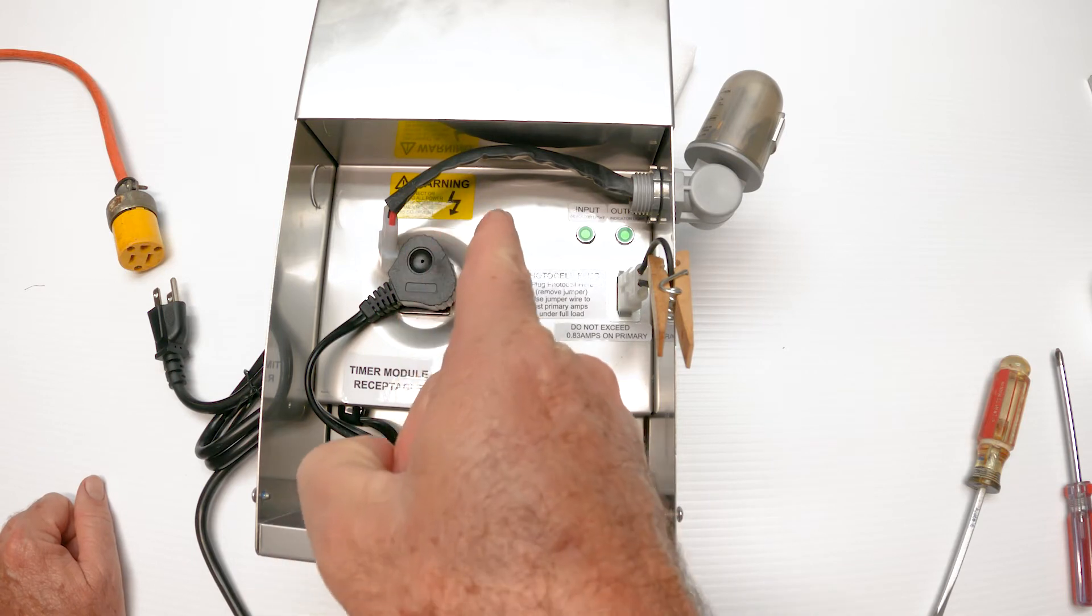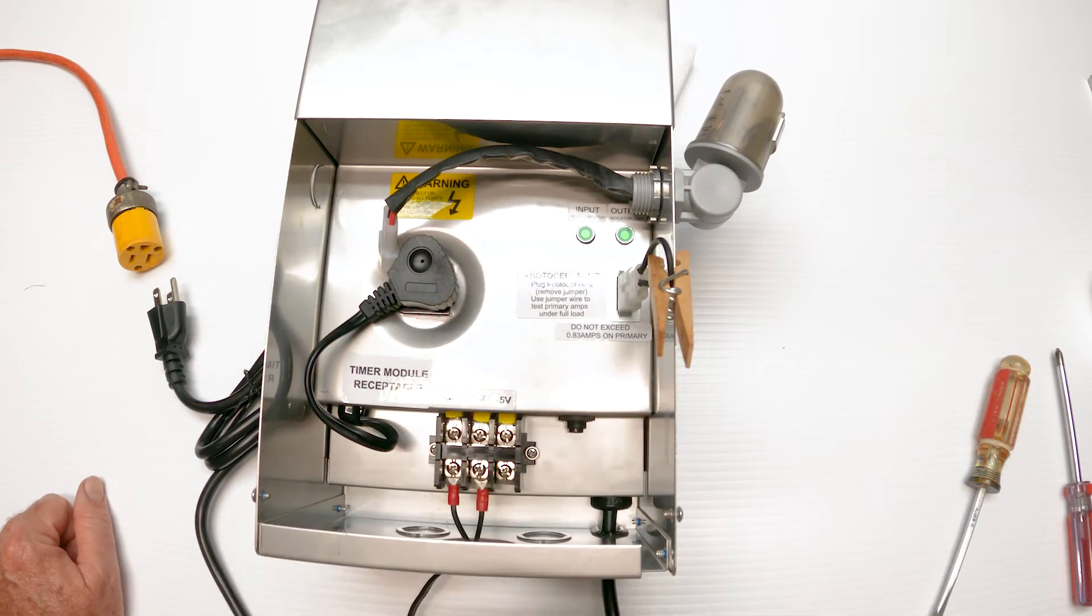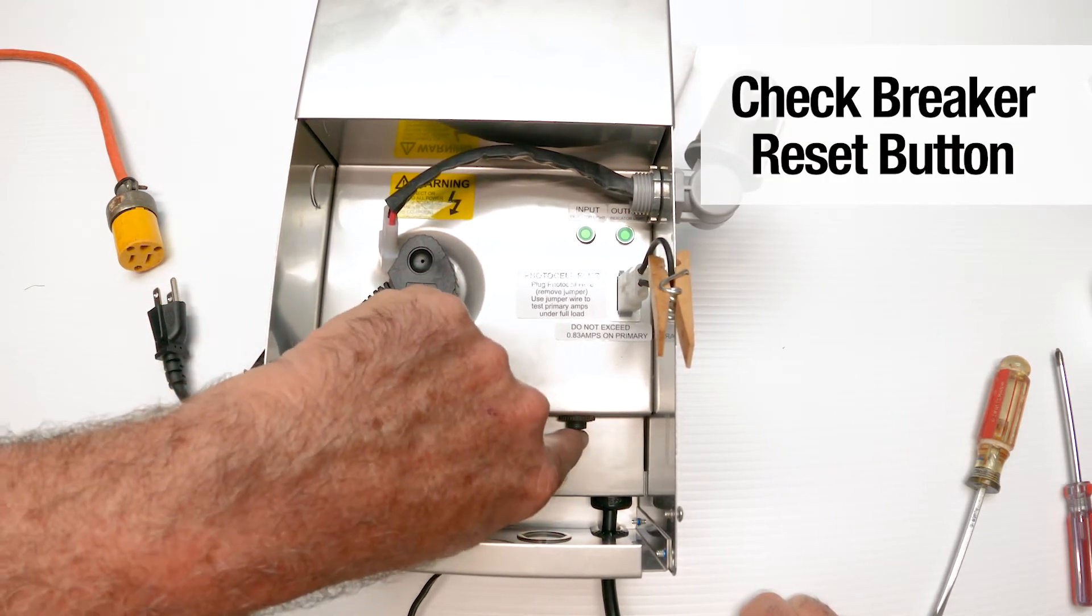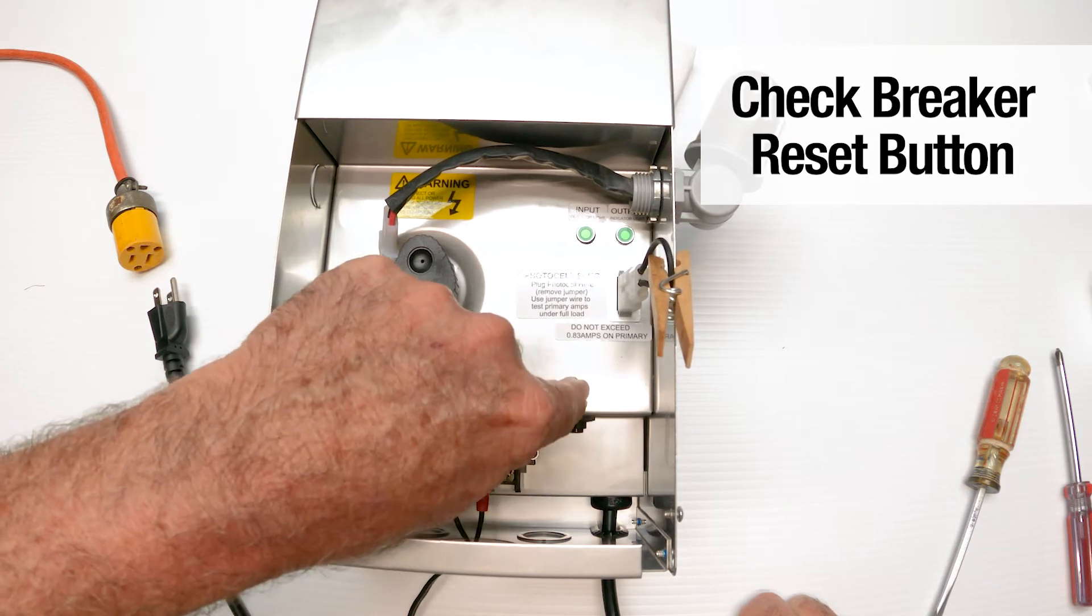Now before I turn this on, I'm going to come down here and check two things. One, I'm going to check the breaker and make sure that it didn't pop. Okay. No, it's good. Kind of loose. So it's not out. So it's not a breaker problem.